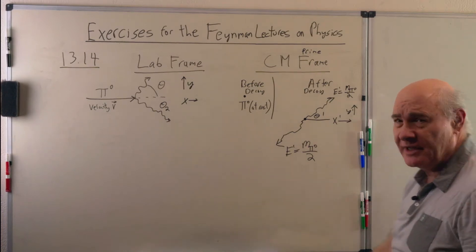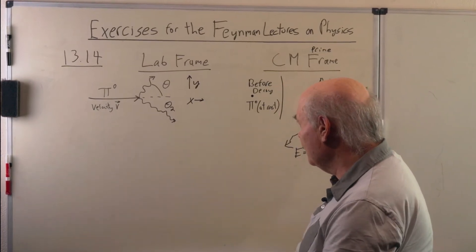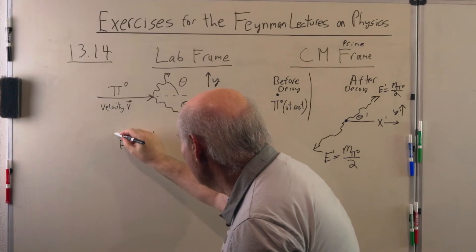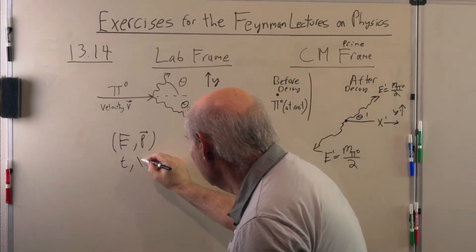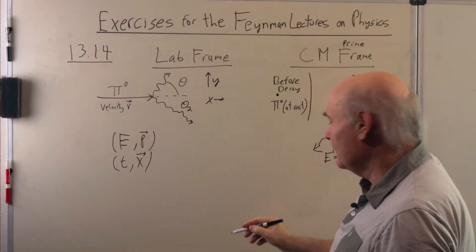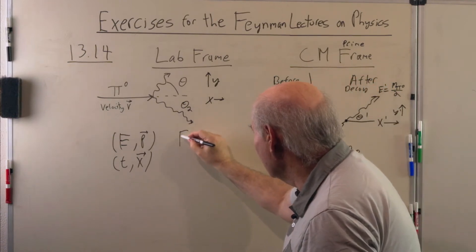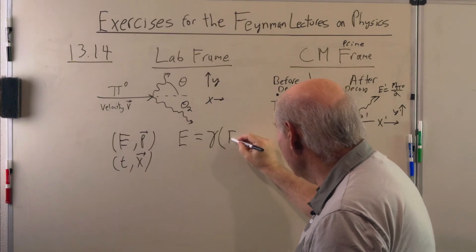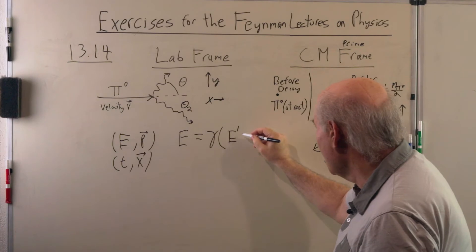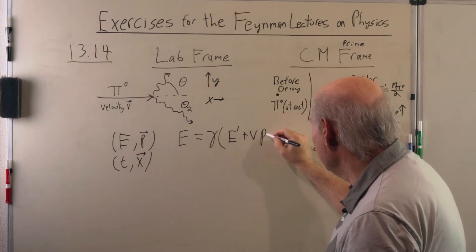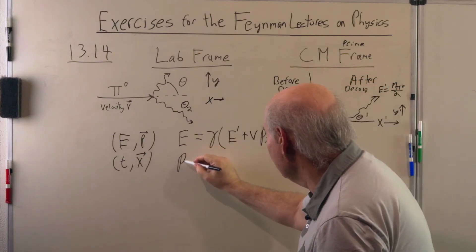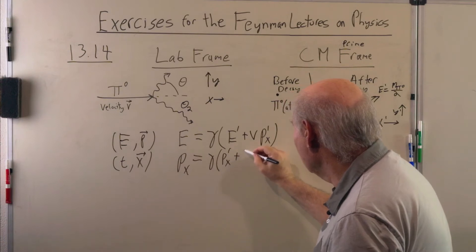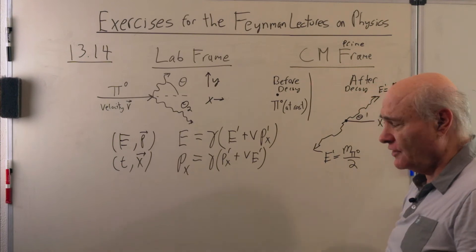Now, to do the calculation, we're going to make use of a Lorentz transformation. We make use of the standard fact that E and p are a four-vector, just as t and x are a four-vector. So the transformation for a four-vector gives us: the energy in the lab frame equals gamma times the energy in the moving frame plus v times the momentum in the moving frame. And the x-component of momentum equals gamma times (px prime plus v times E prime).